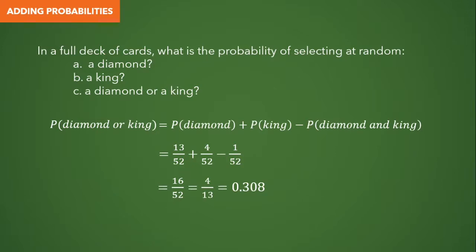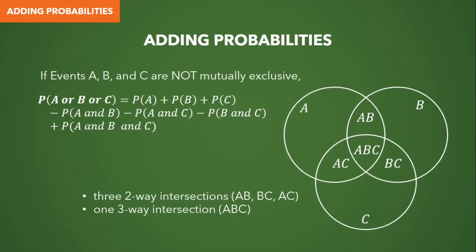But what if you are interested in three events that are not mutually exclusive? In this case, we use a different formula. Looking at the Venn diagram, we have three two-way intersections: A and B, A and C, and B and C, plus one three-way intersection at the middle between A, B, and C. When solving such a problem, we add all three event probabilities, subtract the probability of each two-way intersection, and finally add the probability of the three-way intersection.